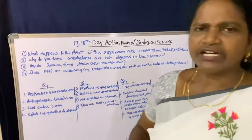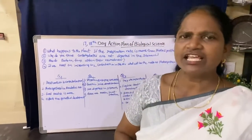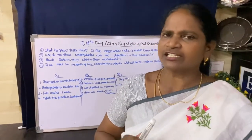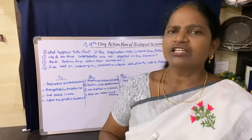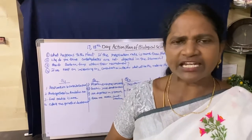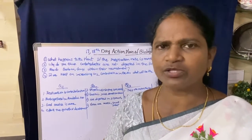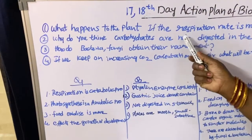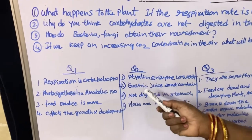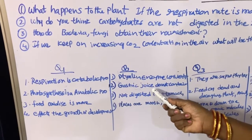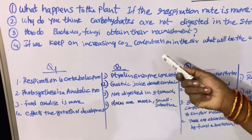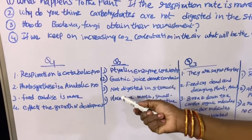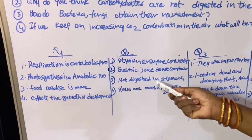For the digestion of carbohydrates, one enzyme is needed. It is present in the saliva of the mouth — it is the Tyalin enzyme. Tyalin enzyme converts carbohydrates to maltose. So the digestion of carbohydrates starts from the mouth. But in gastric juice, digestion does not take place because Tyalin enzyme is not present there, so carbohydrates are not digested in the stomach.